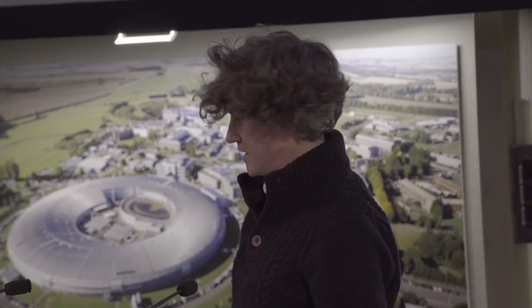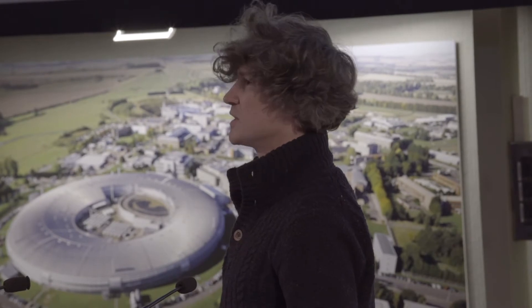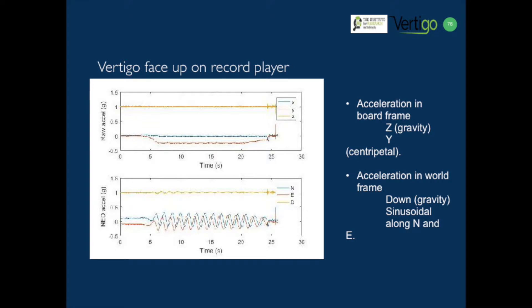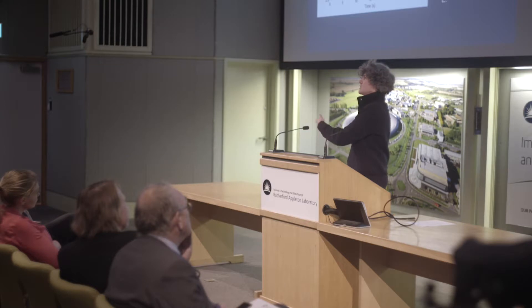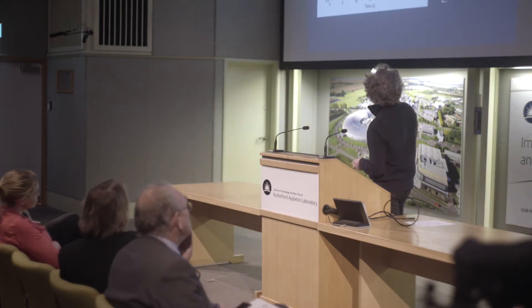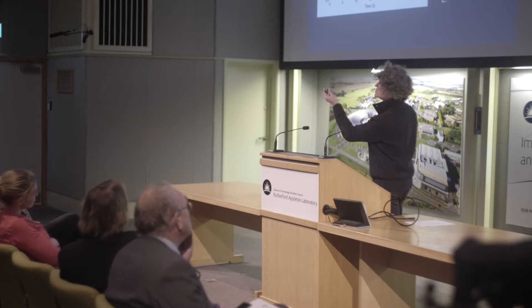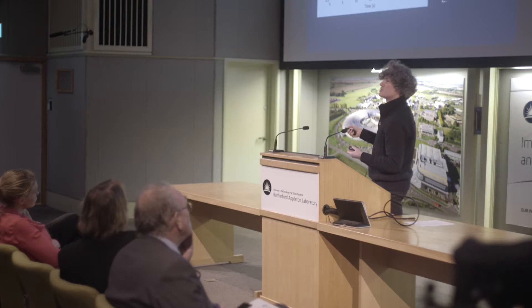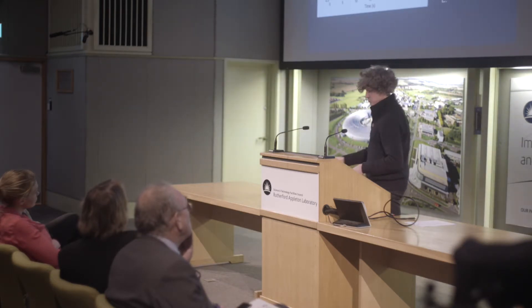So then my next experiment I placed Vertigo on its side. What do we expect to see? Hopefully you'll notice that the bottom graph is very similar. Because it's given in a world frame, it doesn't matter how we mount Vertigo onto the thing we're measuring — that's irrelevant, because it's measuring accelerations in the world frame. So this part's very different: you've got acceleration now in the Z direction, and you have a constant acceleration in Y, which is totally different. But again you get the same rotations in the world frame.